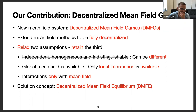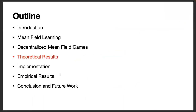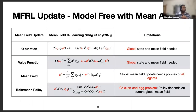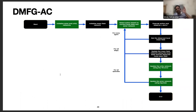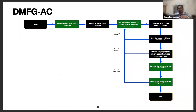We also have a similar actor-critic update scheme, where we update the critic using a TD error and the actor using the log loss, resulting in a very similar algorithm to the Q-learning method.